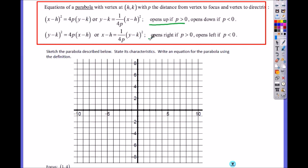Here, if it opens right or left, it's y minus k, not h, squared equals 4p, x minus h. So let's try it.